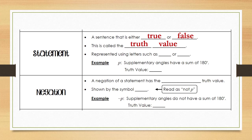Statements can be represented by letters. Very often we will represent statements using the letters p and q — these are not the only letters we can use, but they are the primary letters for this unit. For example, statement p might say: 'supplementary angles have a sum of 180 degrees.'